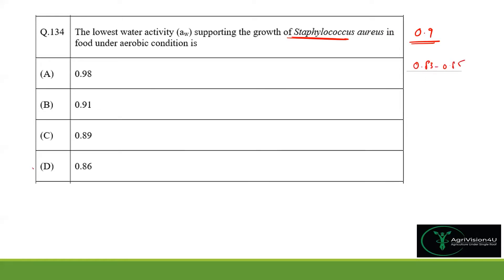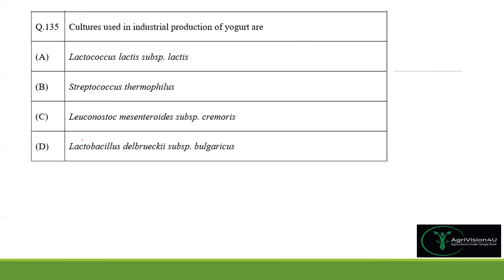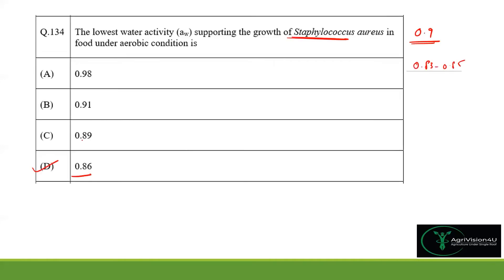The answer would be 0.86 for Staphylococcus aureus, which is a bacterium that produces toxin and causes foodborne illnesses. So 0.86 is the lowest water activity optimal for its growth, and option D would be the right answer.